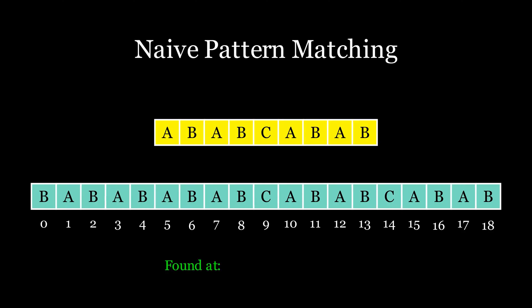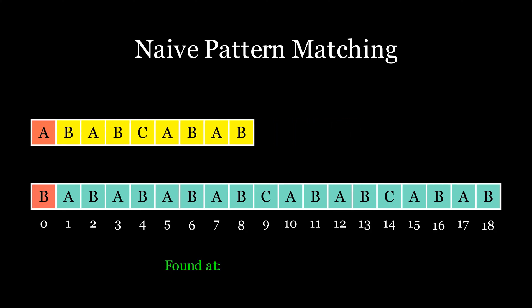Before talking about Knuth-Morris-Pratt algorithm, let's see how the naive algorithm to solve the same problem works. We will slide the pattern over the text and match the corresponding letters in each iteration. And if a match is found, we will note its index.